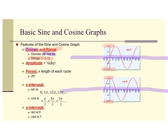Your amplitude is half the change in y. So the change in y here is two — going from negative one up to one. My amplitude is only half of that, which is just one. This is true for your cosine as well — you're only going one unit up and one unit down.